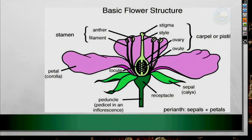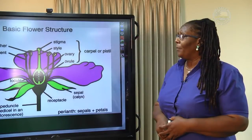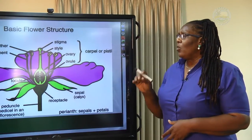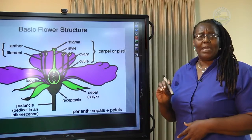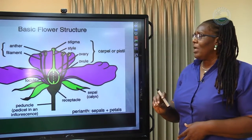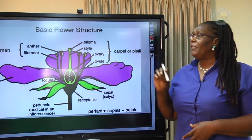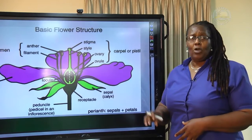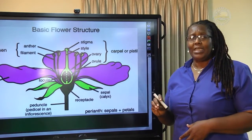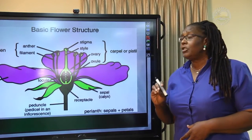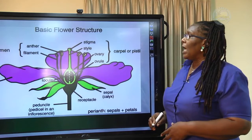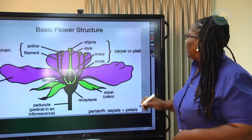This is the basic flower structure. Since primary school you have been looking at the structure of the flower. I want you to key into two main parts: the male part and the female part of the flower, because pollination involves these two parts.